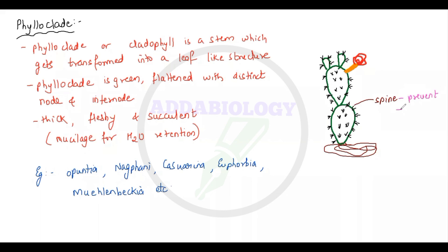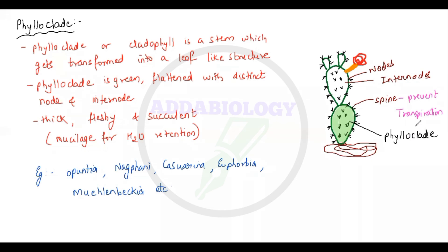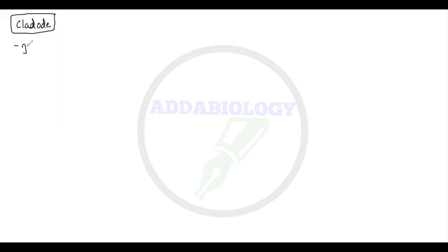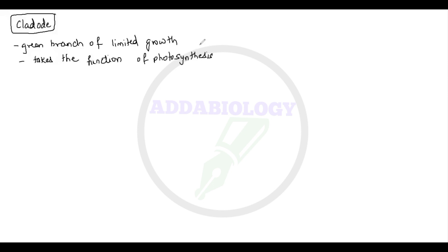In cactus, the stem becomes green and fleshy and performs photosynthesis, while the leaves get modified or reduced into spines. These spines protect the plant from excess transpiration and from browsing animals. Cactus is mostly found in desert areas and stores water in the form of mucilage. The cladode is the second-last aerial modification — it is a green branch of limited growth where the stem takes on the function of photosynthesis to reduce water loss by transpiration.